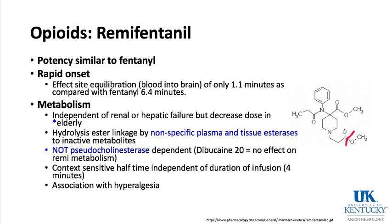Remifentanil is similar in potency to fentanyl — about 100 times as potent as morphine — with a very rapid onset. Its equilibration from blood to brain takes just over one minute, compared to about six minutes for fentanyl. The metabolism of remifentanil is independent of kidney or liver function; it is broken down by ester hydrolysis by nonspecific plasma and tissue esterases to inactive metabolites. It is not pseudocholinesterase-dependent, so a patient with a dibucaine number of 20 (homozygous pseudocholinesterase defect) would have no altered remifentanil metabolism.